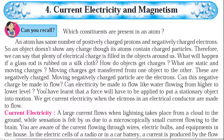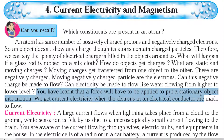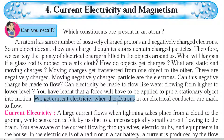Can this negative charge be made to flow? Can electricity be made to flow like water flowing from higher to lower level? A force will have to be applied to put a stationary object into motion. Similarly, for electrons in an atom or object, an external force is needed. We get current electricity when the electrons in the electric conductor are made to flow.